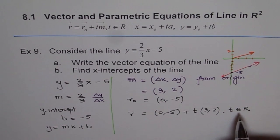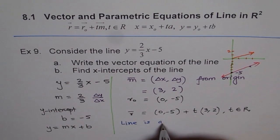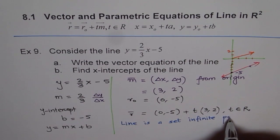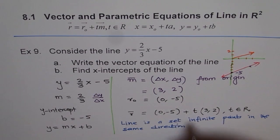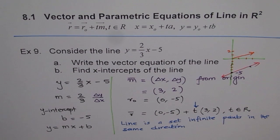This factor t belongs to real number and shows that line is a set of infinite points in the same direction. Line is a set of infinite points in the same direction. And that value of t ensures that same direction. You just change the value of t, it could be 1, 1.1, 1.2, 1.3, 10, 100, 11, whatever. But it gives you all the points in the line. It could be negative, positive, all real numbers. So that is what it is.